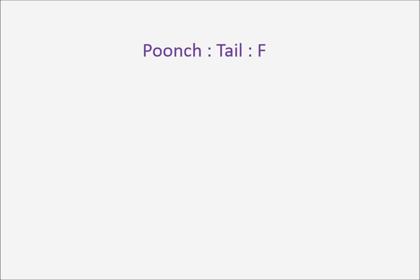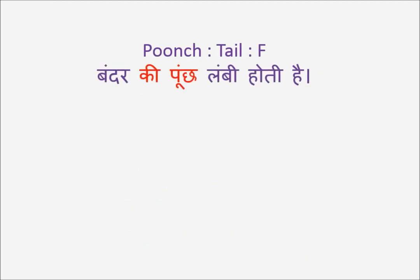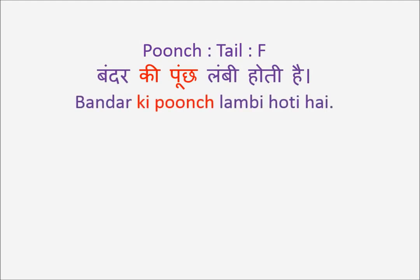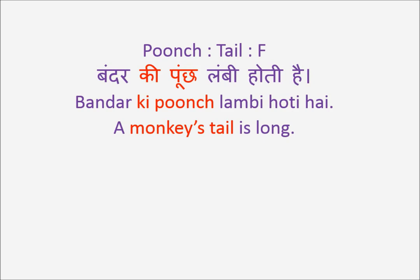Then let's proceed to feminine gender. Poonch is tail. Bandar Ki Poonch Lambi Hoti Hai — a monkey's tail is long. Poonch being feminine, even though Bandar is masculine, we say Bandar Ki Poonch Lambi Hoti Hai. We use Ki because Poonch is tail — feminine gender.